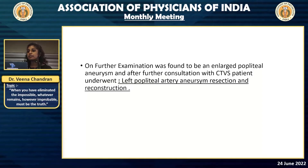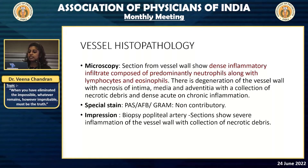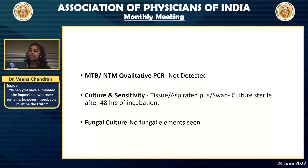We had considered taking a biopsy from one of the aneurysms earlier, but bleeding risk was a concern. CTVS had informed us that if reconstruction was needed, we could obtain histopathology at that time. The vessel histopathology microscopy showed dense inflammatory infiltrate composed predominantly of neutrophils along with lymphocytes and eosinophils, suggestive of acute and chronic inflammation. The impression was a collection of necrotic debris. MTB and NTM qualitative PCR was negative, and fungal culture and culture sensitivity were negative.